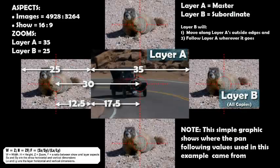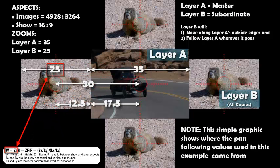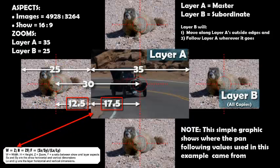One of the first things we need to do is figure out what the dimensions of the layers involved are. We have a car layer, layer A, with a zoom of 35%, and the groundhog layer, layer B, with a zoom of 25%. So their half widths are 17.5 and 12.5 respectively, and to align them next to each other requires a distance from their centers of 30.